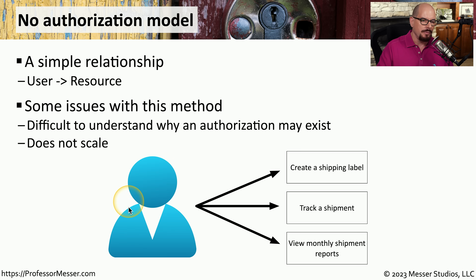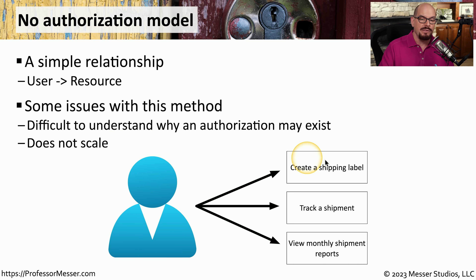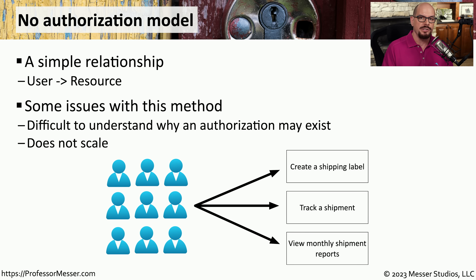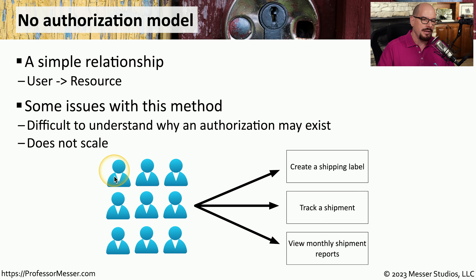Let's take an example of somebody in the shipping and receiving department. This is someone who needs access to a large number of systems and a lot of data — maybe there's tracking information, shipping labels, databases of customers. We would create separate rights and permissions so that any time this person logged in, we would need to give them rights to create a shipping label, track a shipment, view monthly shipment reports, access customer data, and anything else they need for their day-to-day operations. If this is the only person in shipping and receiving, this is a relatively easy process. But what if you're part of a larger organization that has tens or hundreds of people in shipping and receiving? It would be difficult to take every single user account and manually set up rights and permissions for every single resource. You can see why this would be very difficult to scale.